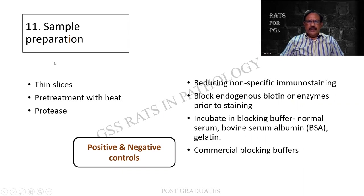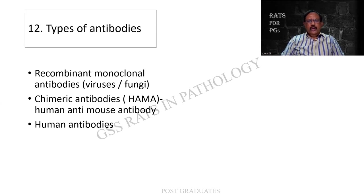How do you prepare the samples? They can be taken in thin slices. They have to be pre-treated with heat, and protease has to be used. Also, you find that there has to be a reduction in the non-specific immunostaining, blocking the endogenous biotin or enzymes prior to staining. They have to be incubated in blocking buffers, including commercially used blocking buffers. Positive and negative controls will have to be used throughout. What are the types of antibodies? The types of antibodies can be the anti-mouse antibody, the human antibodies which are being used of late, and the third one - monoclonal antibodies against viruses and fungi.